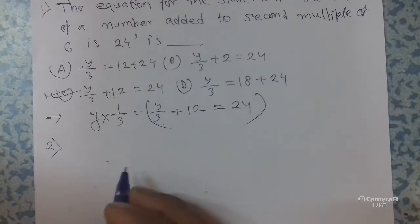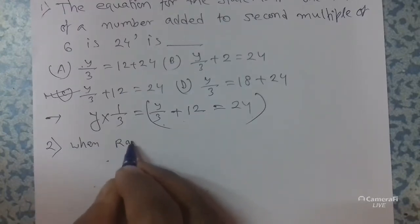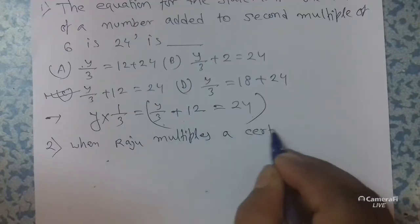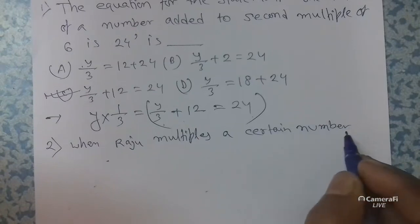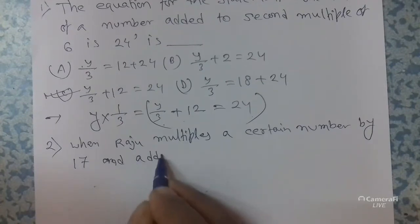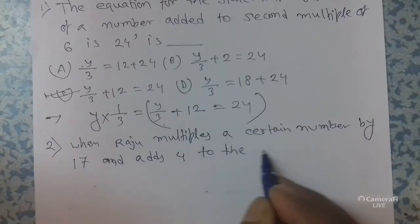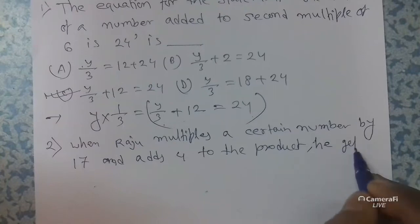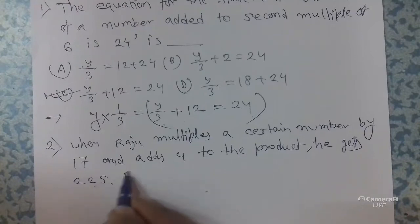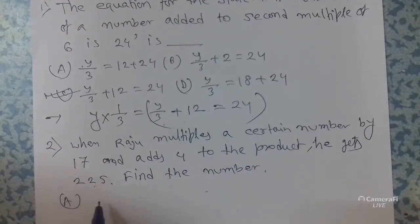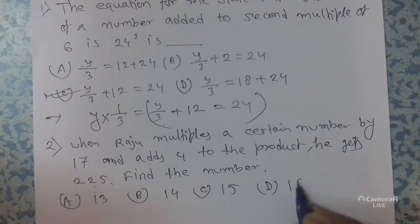Next problem: when Raju multiplies a certain number by 17 and adds 4 to the product, he gets 225. Find the number. The options are 13, 14, 15, and 16.